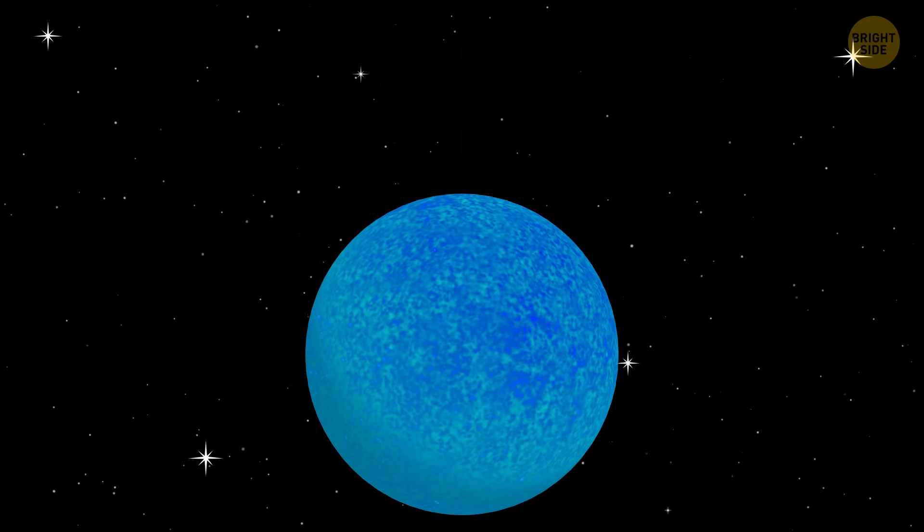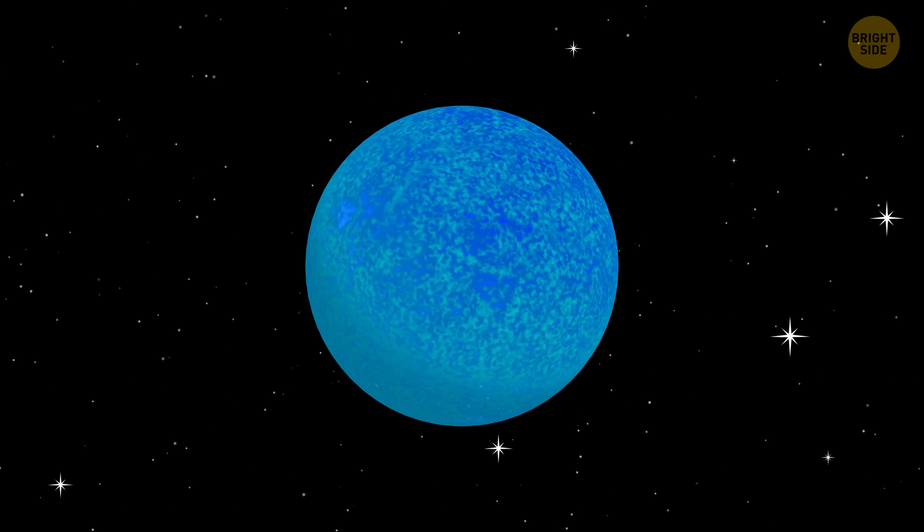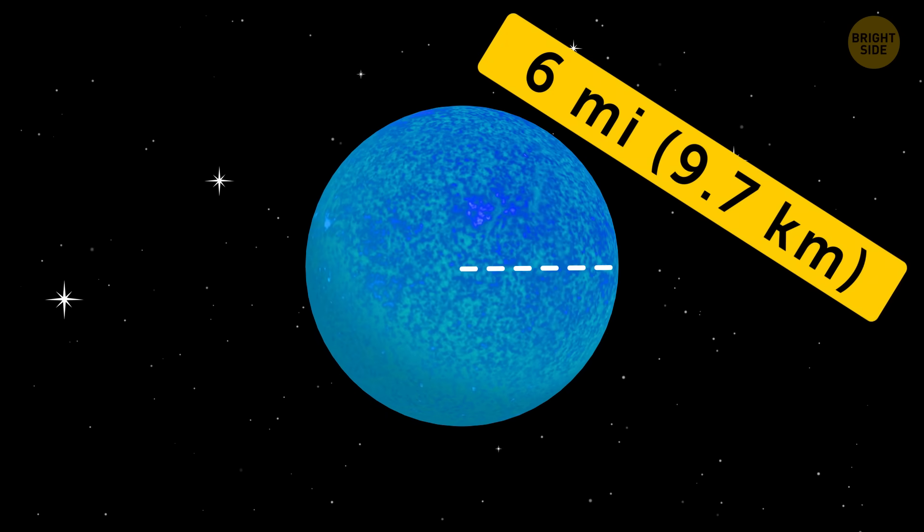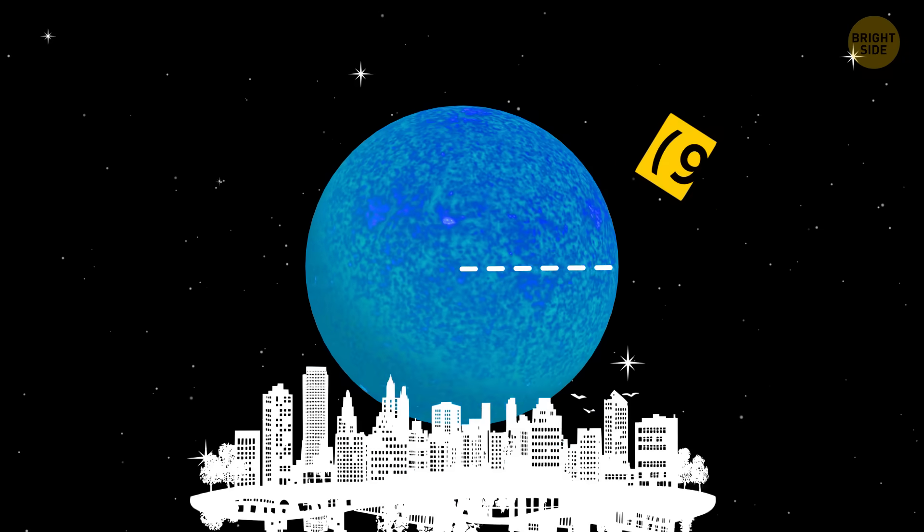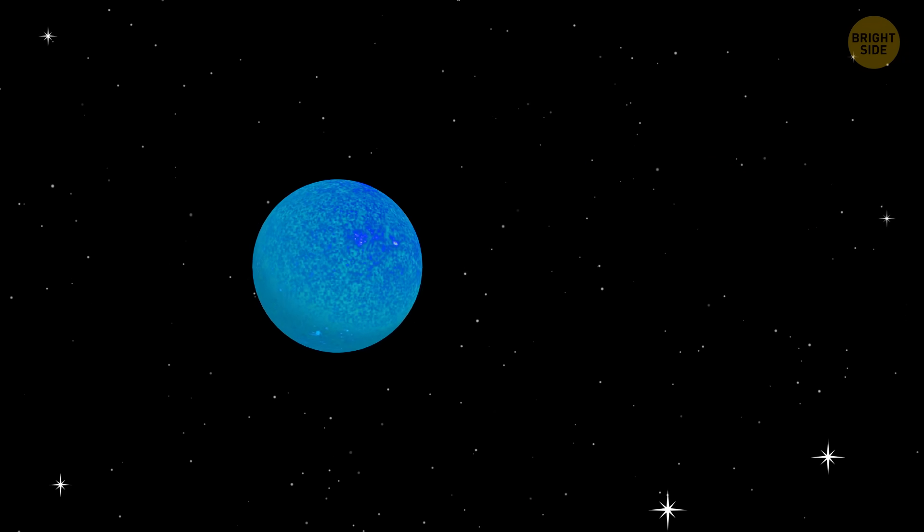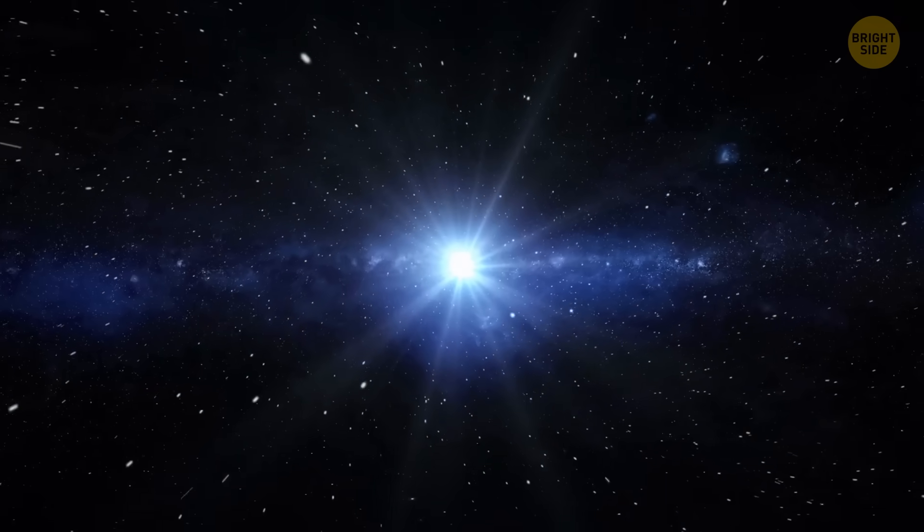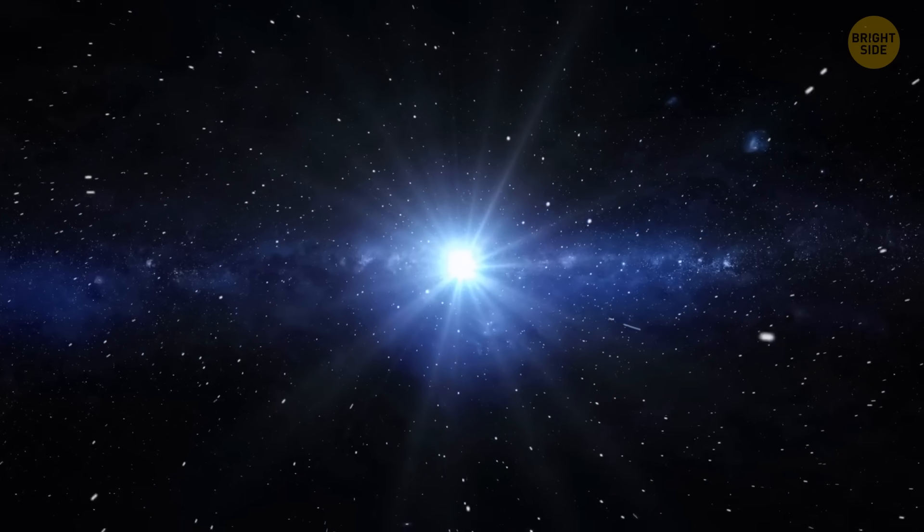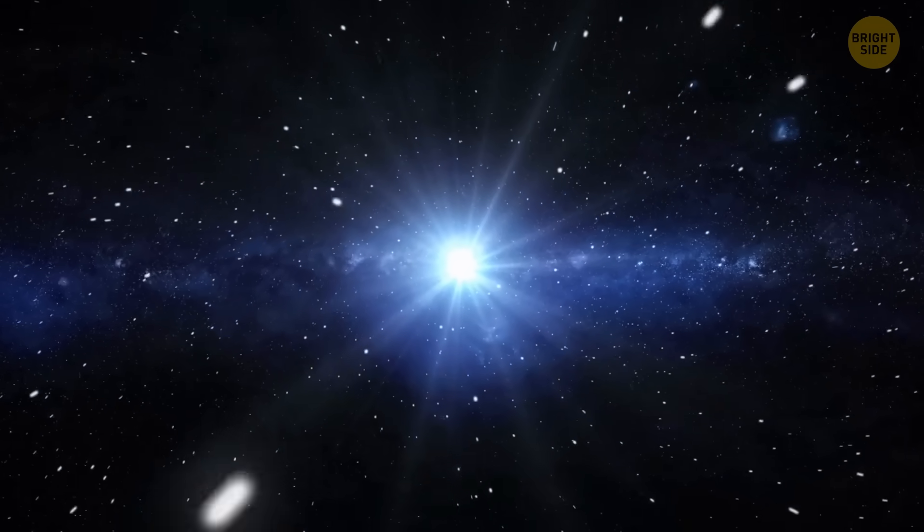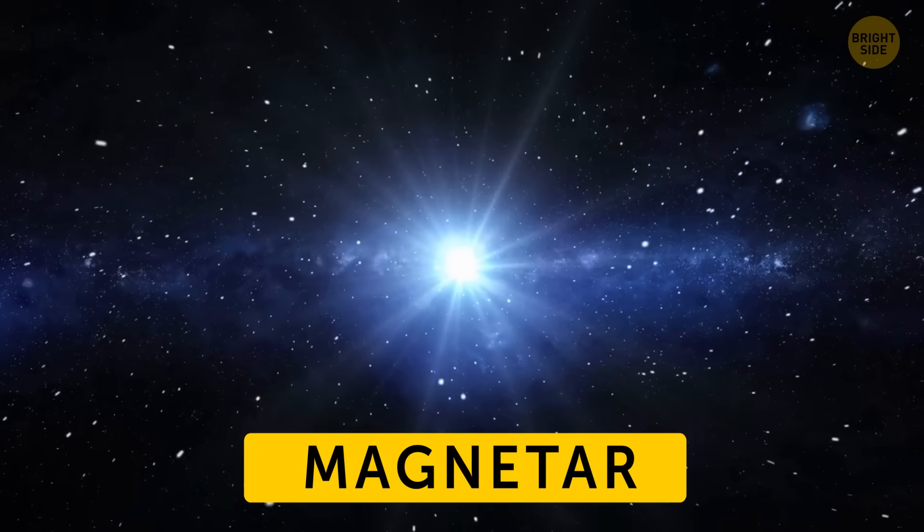So even though they're so heavy, these stars are surprisingly small, only about 6 miles in radius. That's like a city size, and it would still weigh more than our sun. But if that's not enough horror for you, the neutron star we're talking about wasn't your regular one. It was a magnetar.